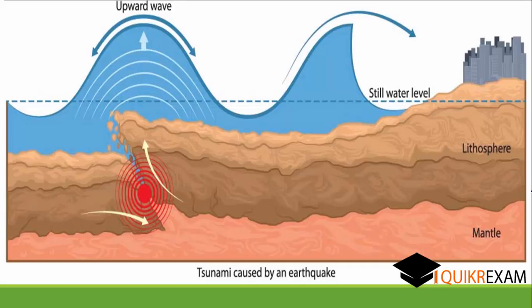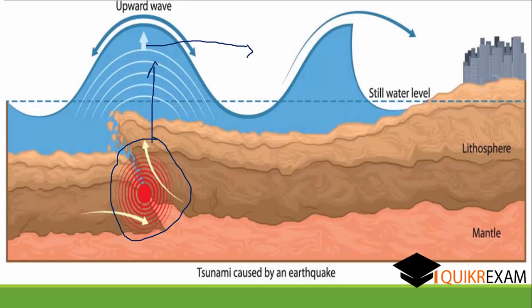The first reason for a tsunami is an earthquake under the sea. When the continental plate strikes with the oceanic plate, one plate comes under another. Due to this, high pressure generates and this pressure pulls the water in the upward direction, and this wave travels toward the harbour.